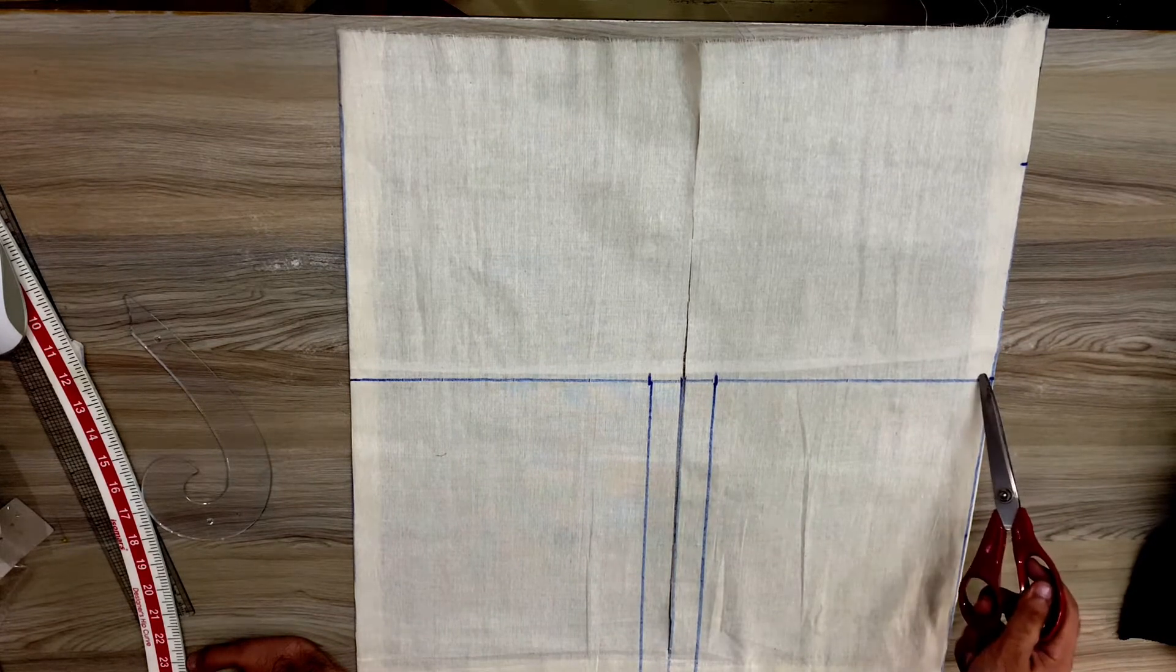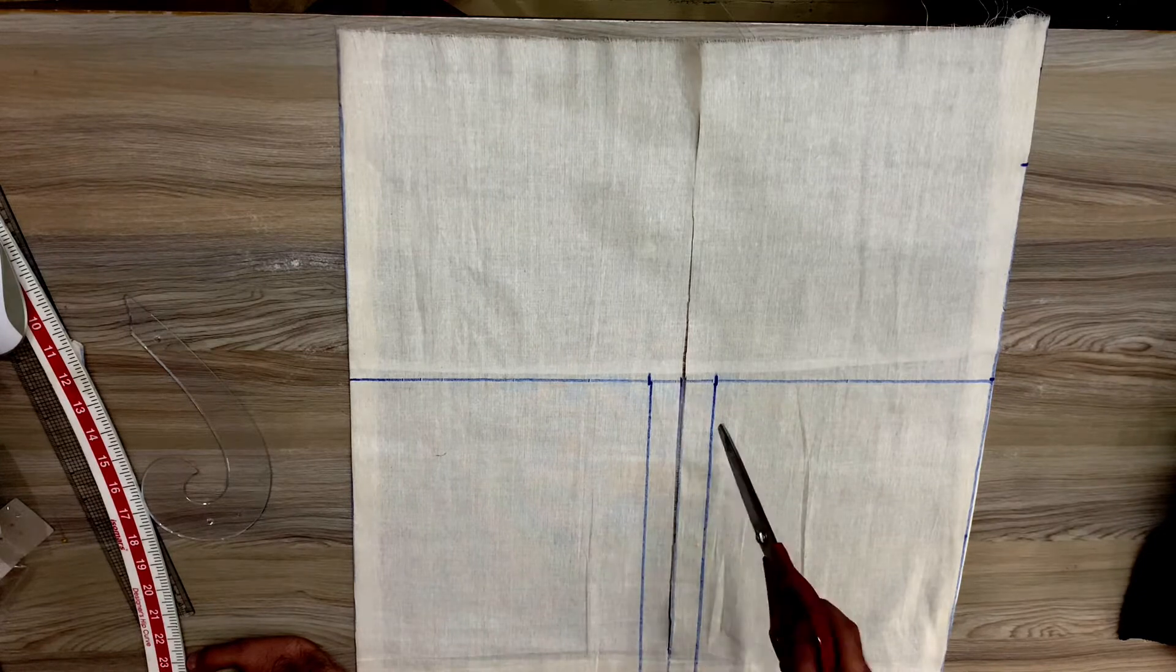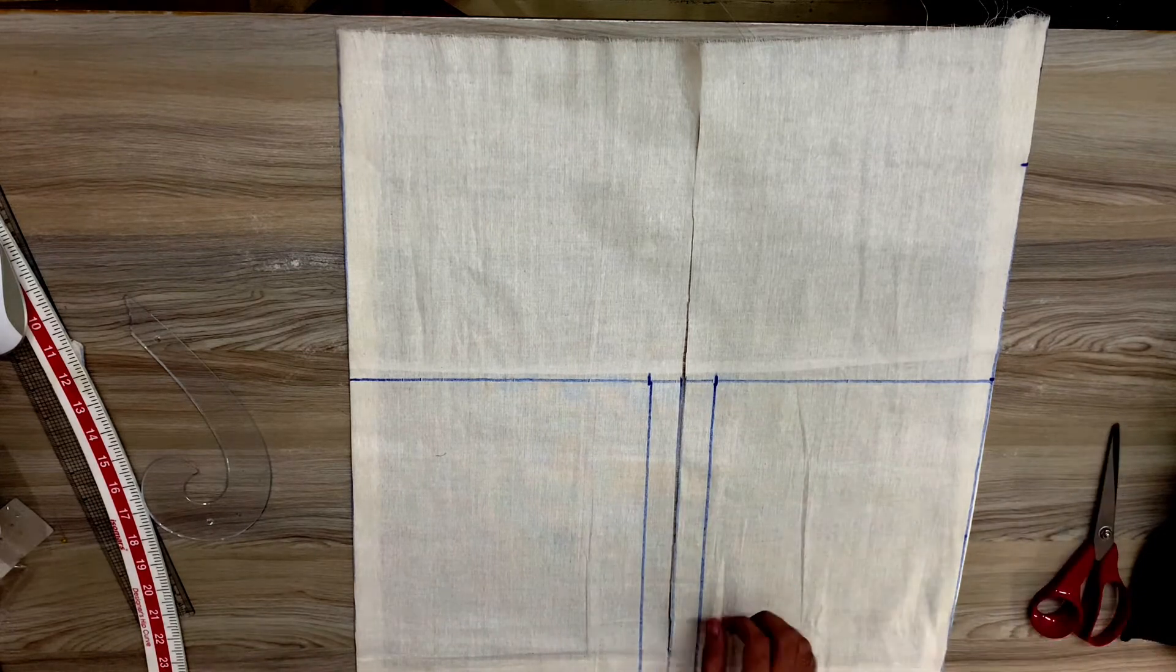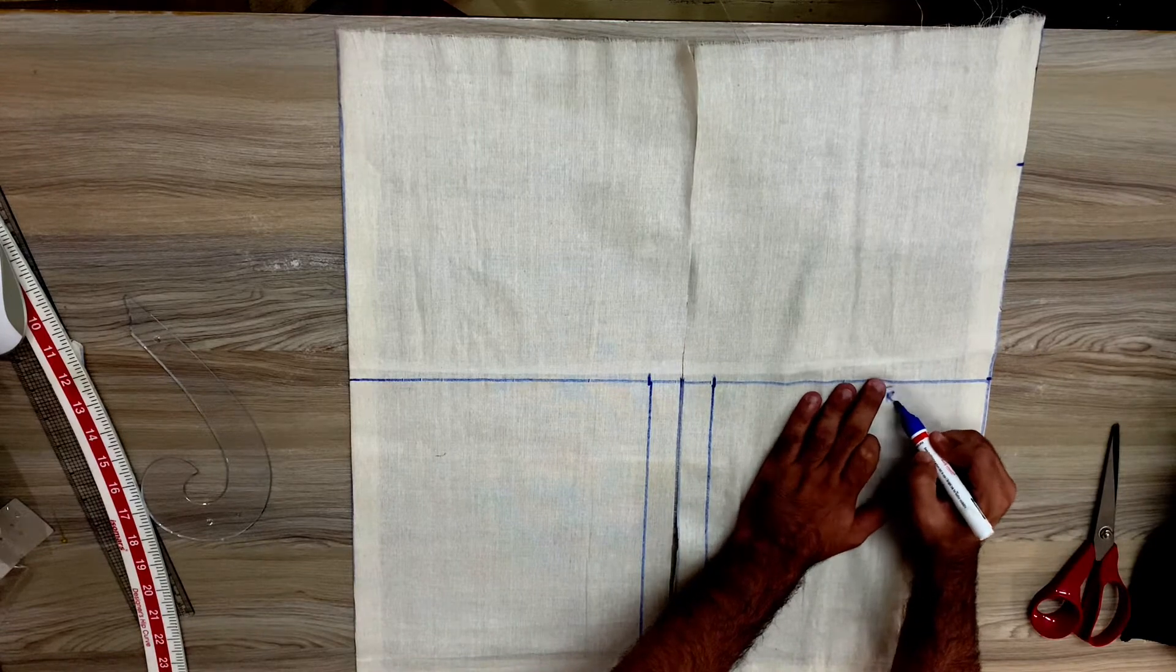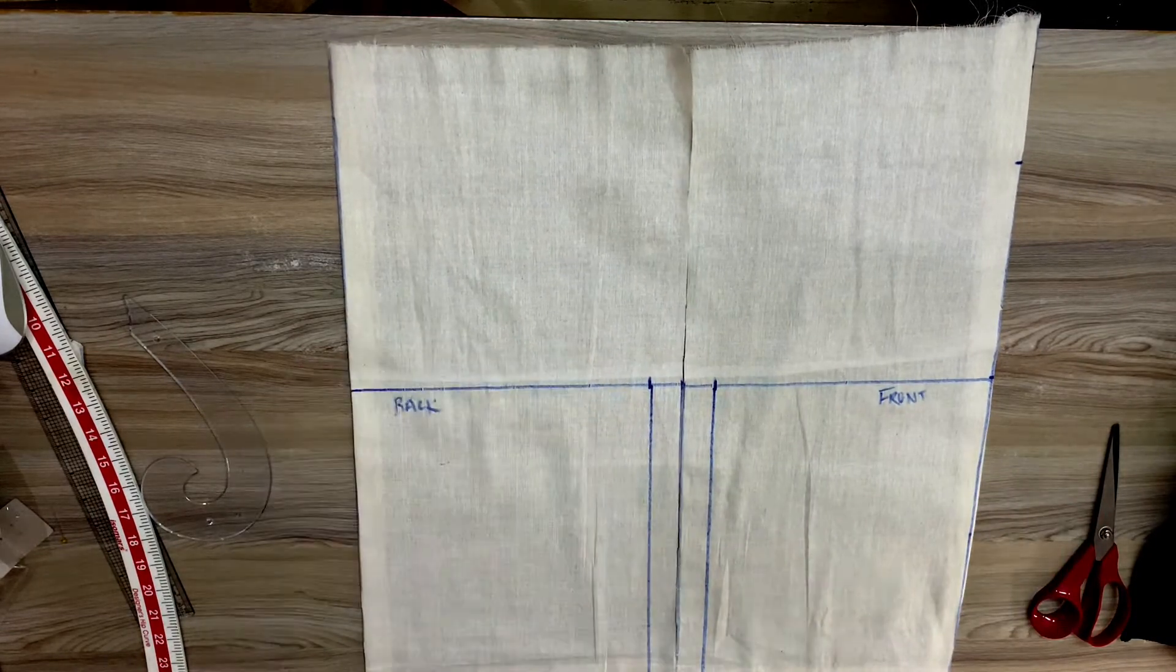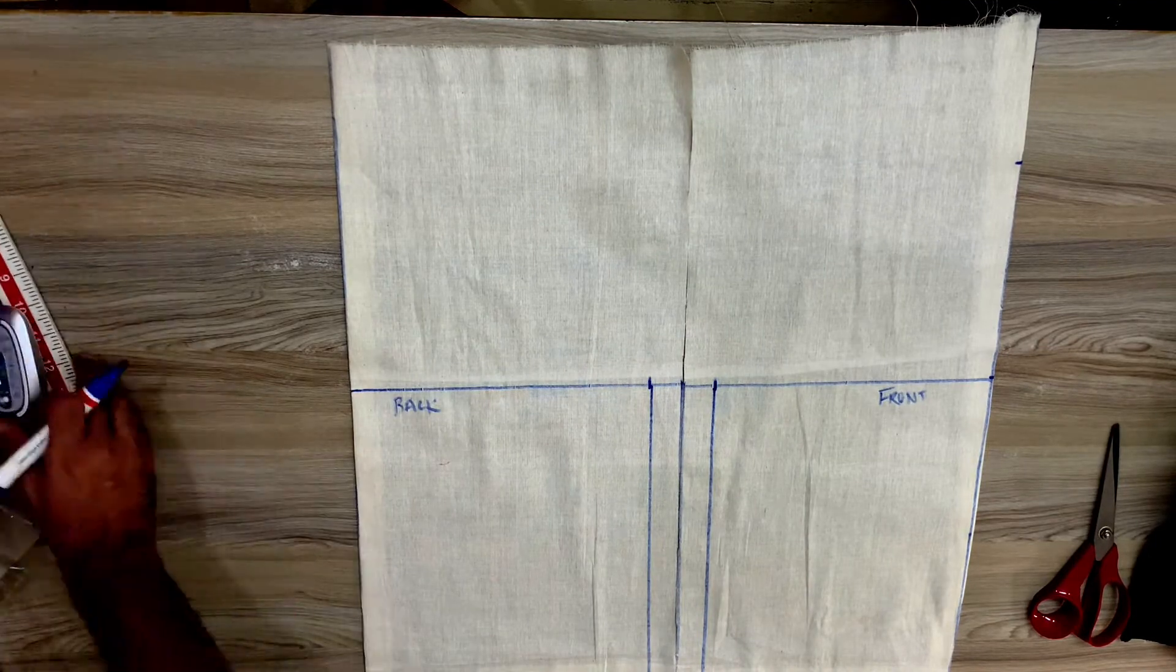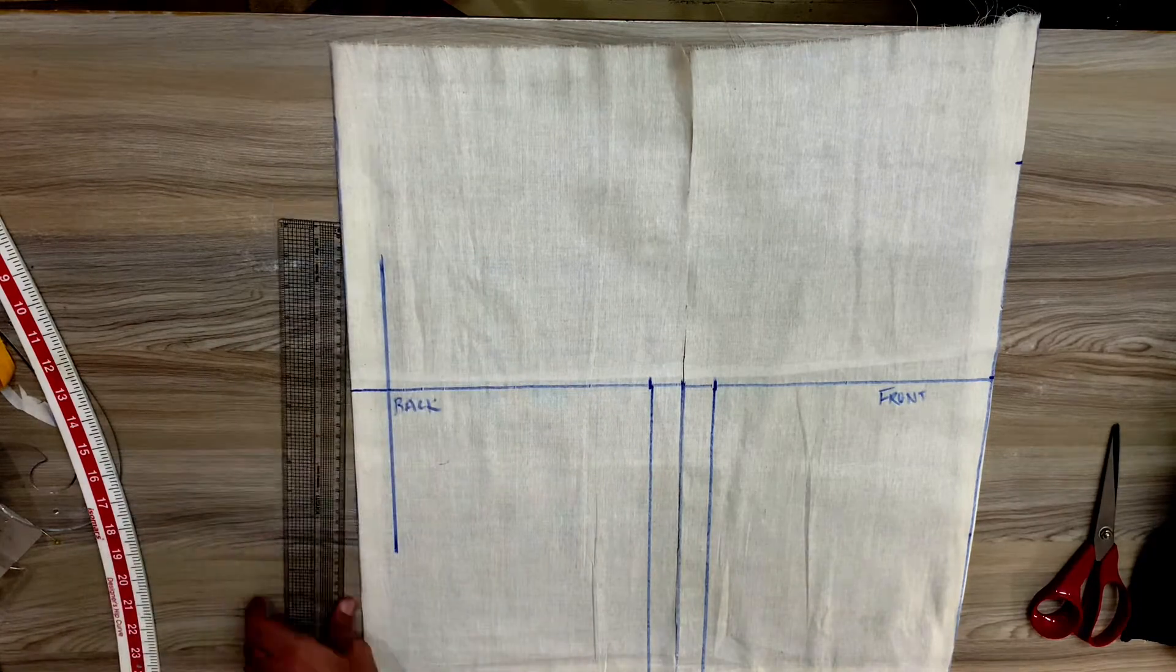Then 7 inches for the hip level, and make a perpendicular line in continuation with front and back and label them as per the diagram. Then divide the fabric into two parts by marking the seam allowances of the side seam on the lower half of the garment.